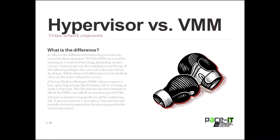A hypervisor generally gets installed on a bare metal box and it provides the environment and also manages the virtual experience. Those are the differences — they are two different things. A virtual machine in a hosted environment is called a Type 2 VM, while a Type 1 is the one that runs off of a bare metal box.